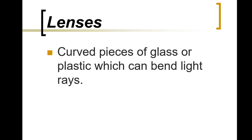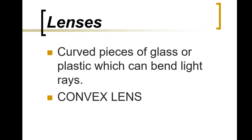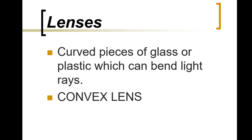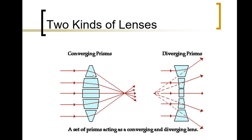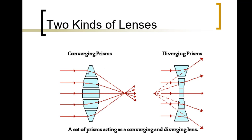Lenses are curved pieces of glass or plastic which can bend light rays as light rays pass through them. We have two types of lenses: convex lens and concave lens. A convex lens is thicker at the middle, and a concave lens is thicker on the edges.